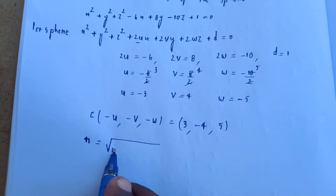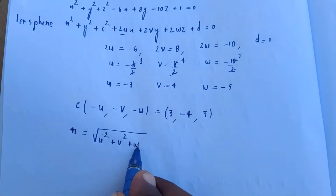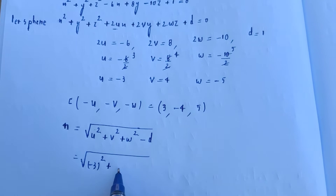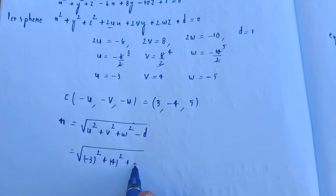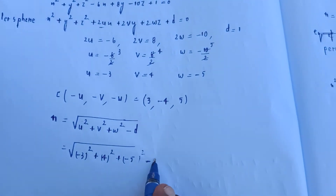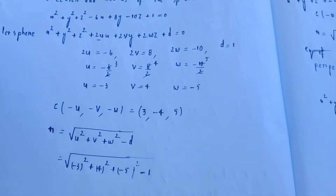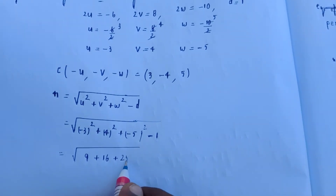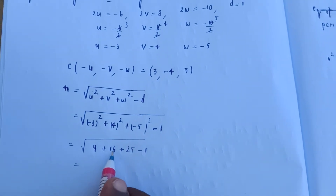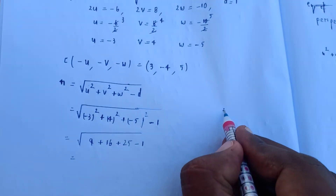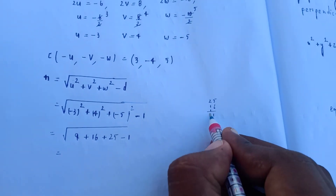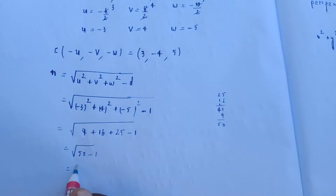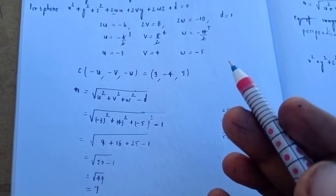The radius equals the square root of u squared plus v squared plus w squared minus d. That is root of (minus 3) squared plus 4 squared plus (minus 5) squared minus 1, which equals root of 9 plus 16 plus 25 minus 1, equals root of 49, equals 7. So the radius is 7.